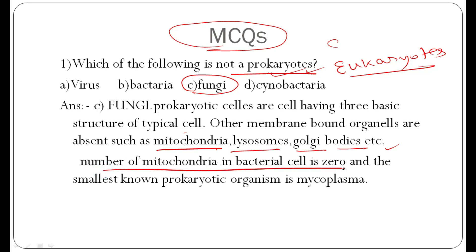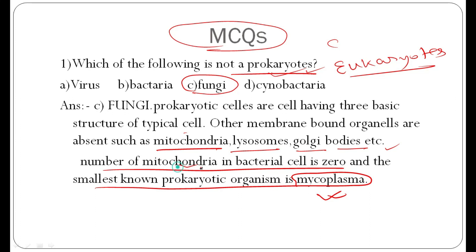The number of mitochondria in a bacterial cell is zero. The smallest prokaryotic organism is mycoplasma — a very important question. The smallest prokaryotic organism is mycoplasma, and mitochondria count in bacteria is zero.